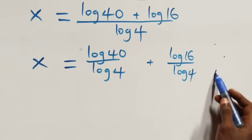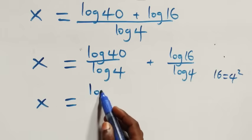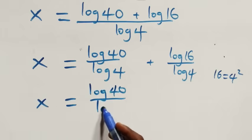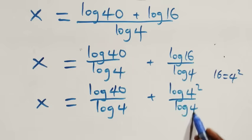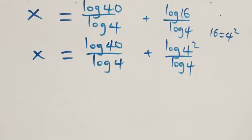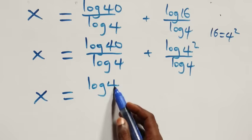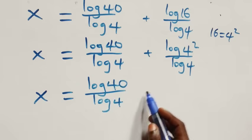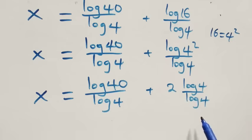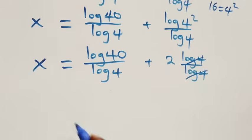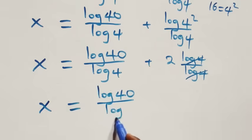We apply the power rule: 16 is 4 squared, so log 16 over log 4 becomes log 4 squared over log 4, which equals 2 log 4 over log 4. The log 4 cancels, leaving 2. So we have x equals log 40 over log 4 plus 2.